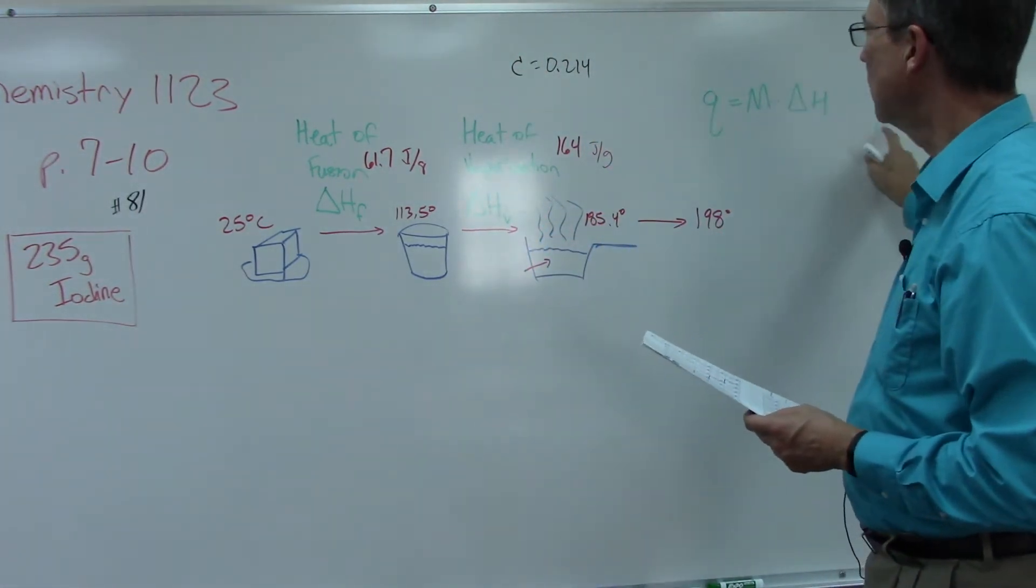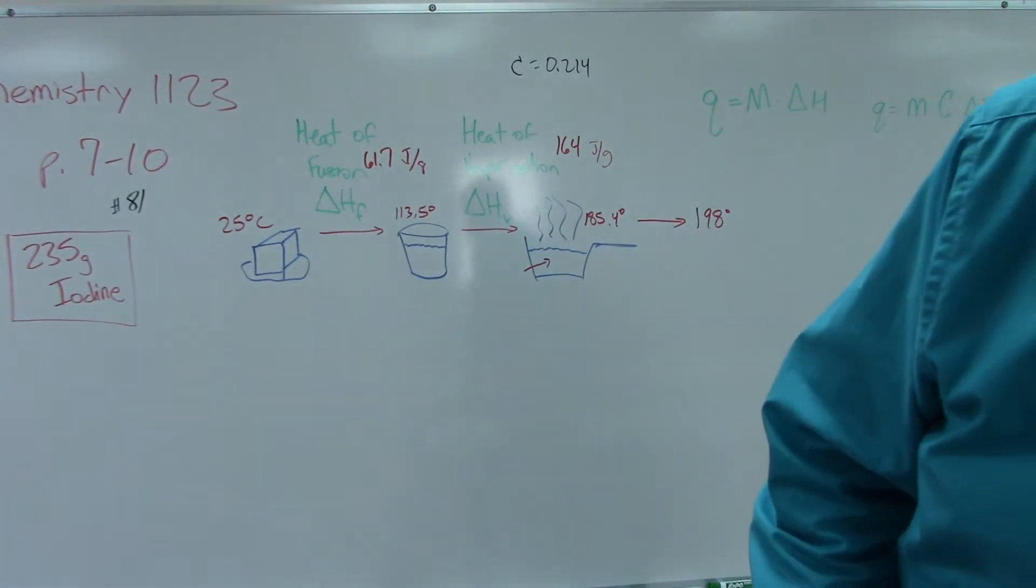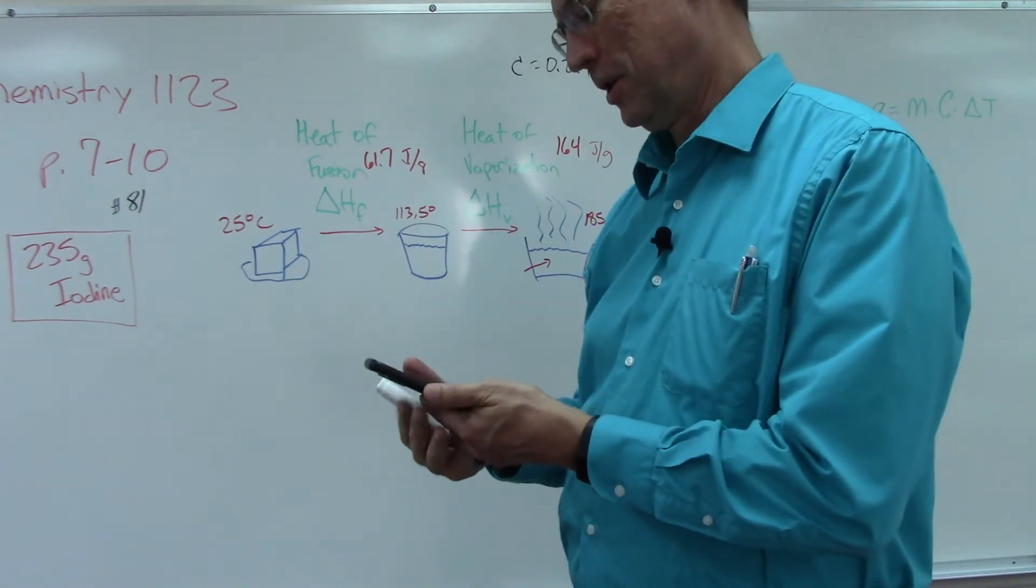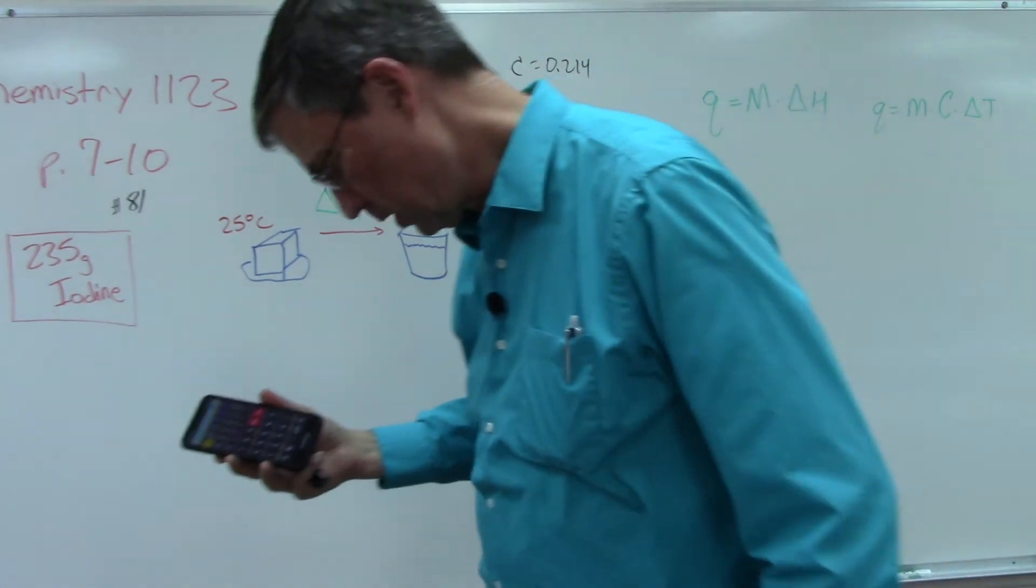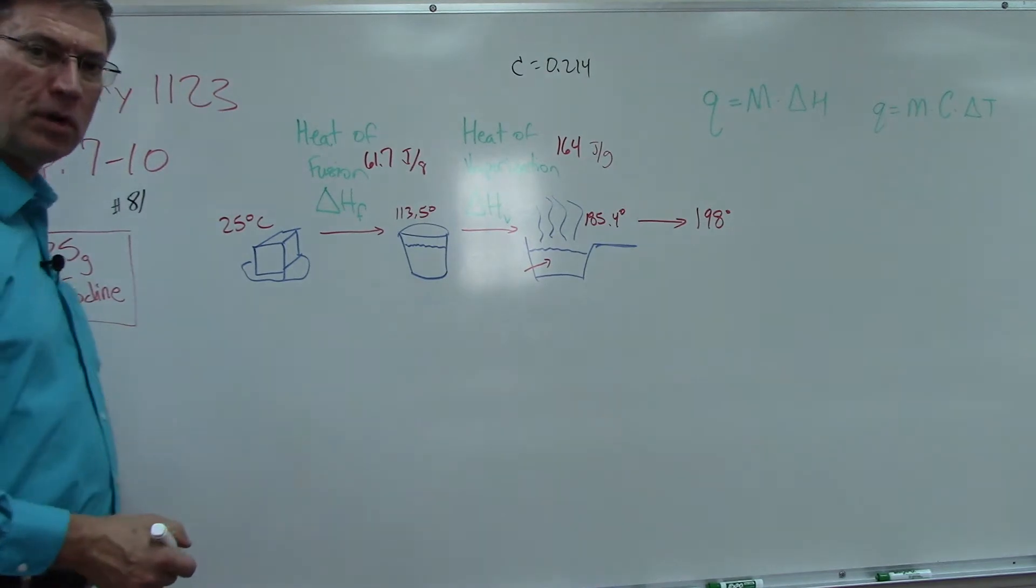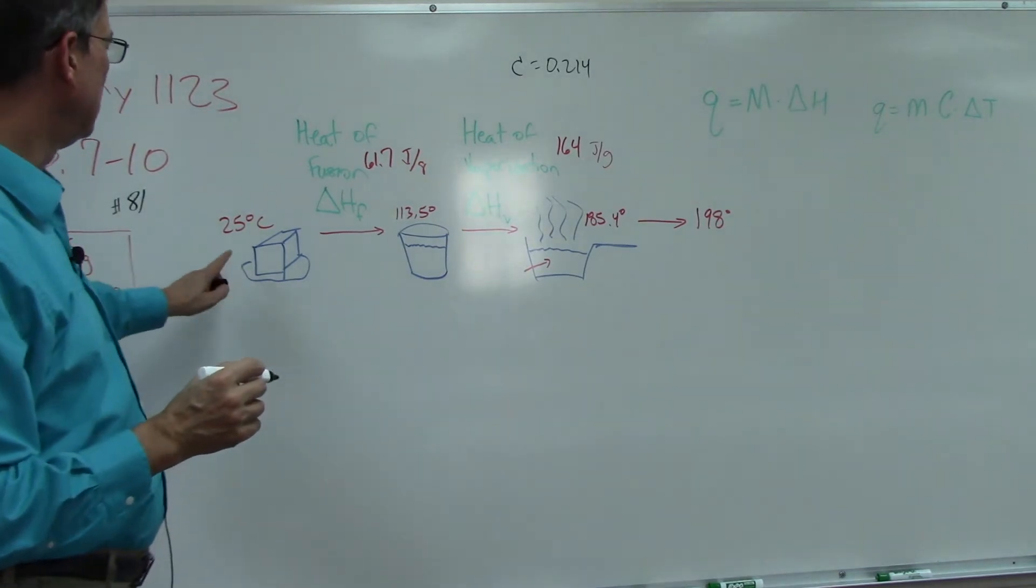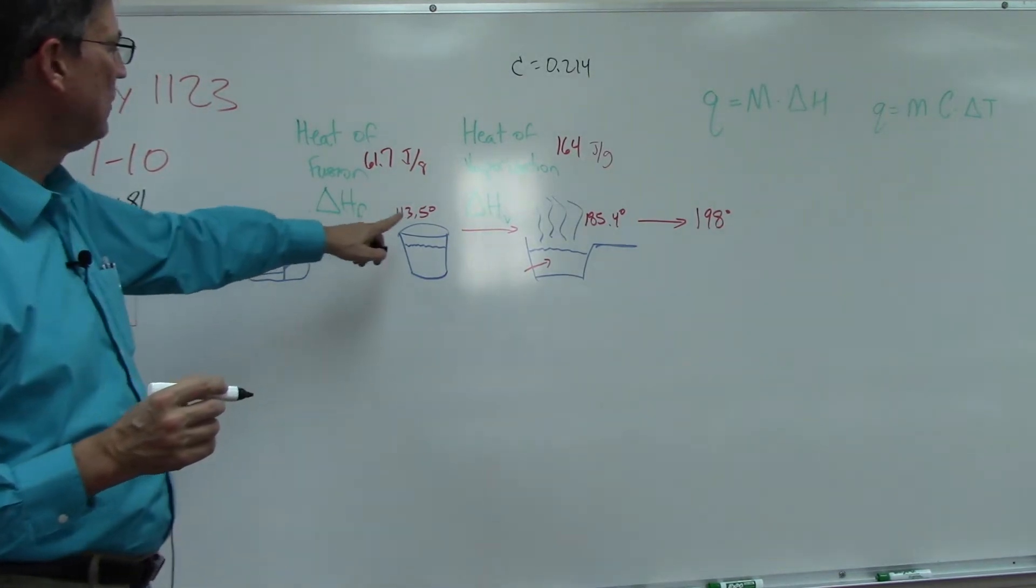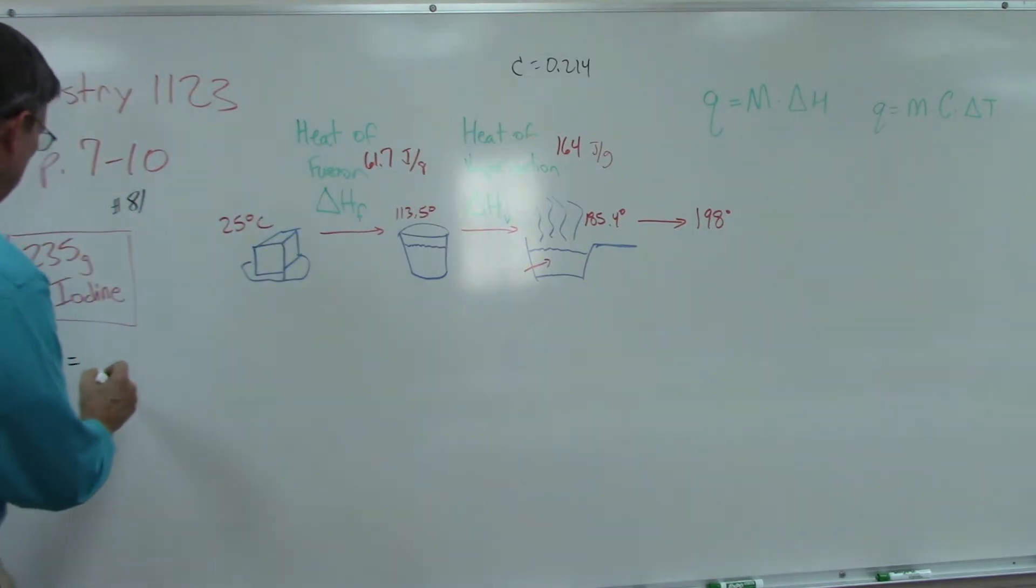Let's walk through our steps. Do you have a calculator handy? I've got mine on calculator mode. I'm going to start way over here. We're going to call this Q1 and we're going to raise the temperature from 25 to 113.5.